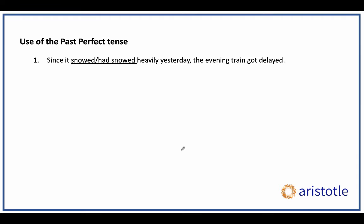If you look at the sentence — 'Since it snowed heavily yesterday, the evening train got delayed' — 'got delayed' is your simple past tense. Before the delay came the snowing, so snowing is the earlier of the two past events. That is why 'had snowed' is absolutely correct.